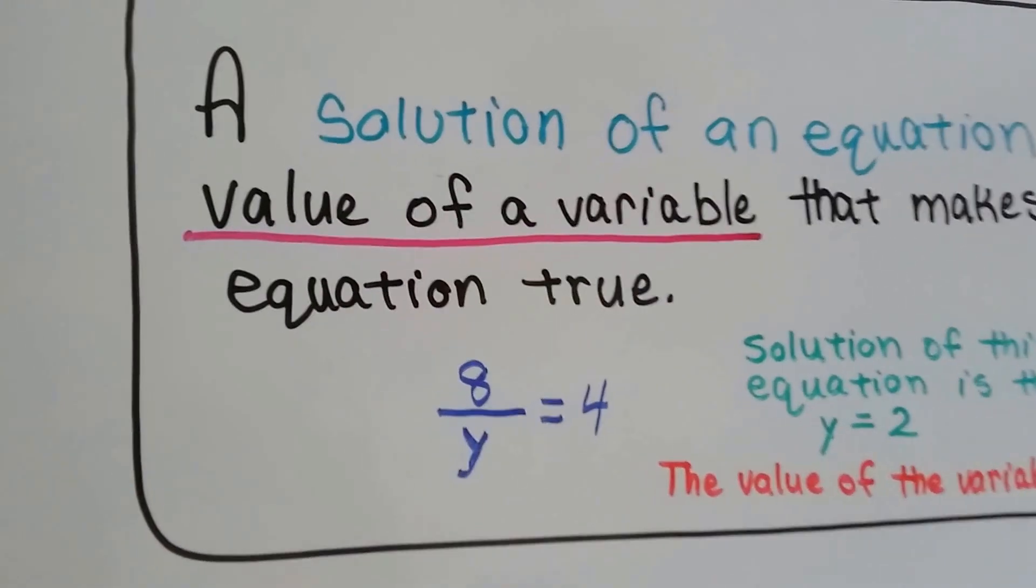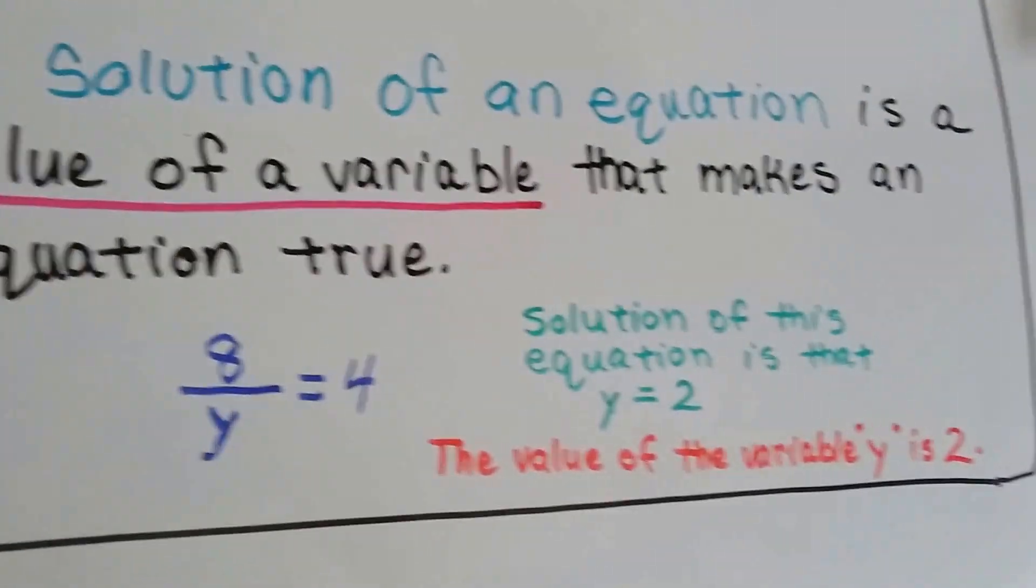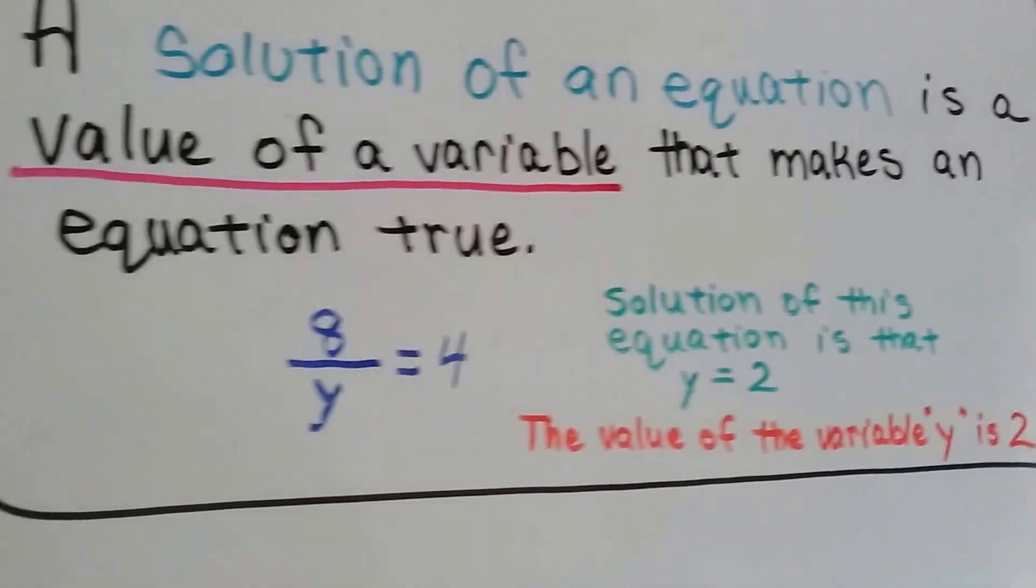If we had the equation 8 over y equals 4, we'd know the value of the variable y is 2 because it would make the equation true. Alright.